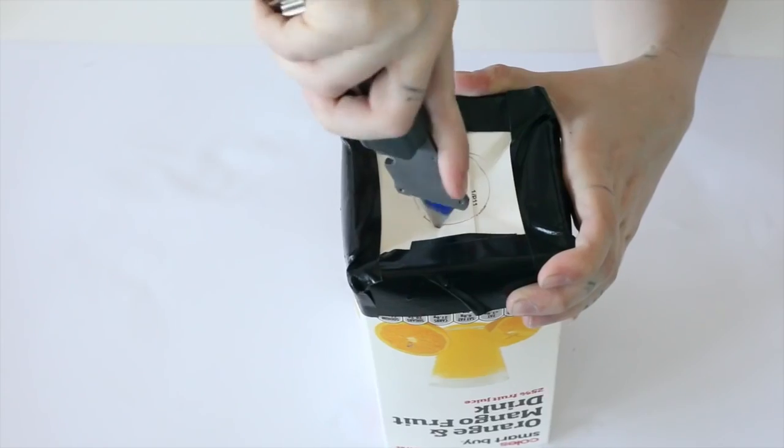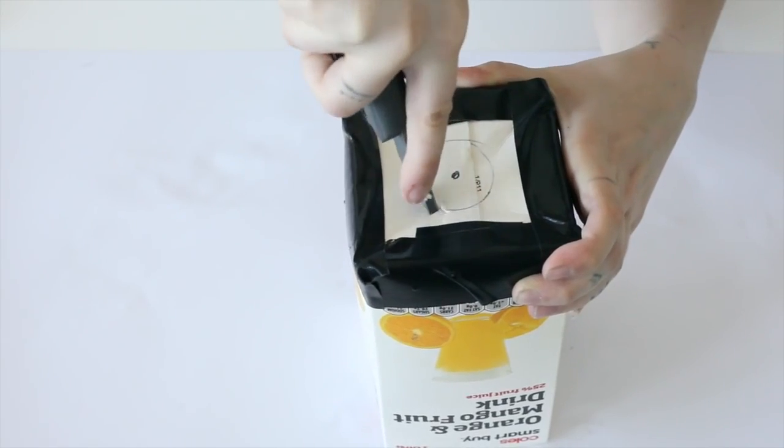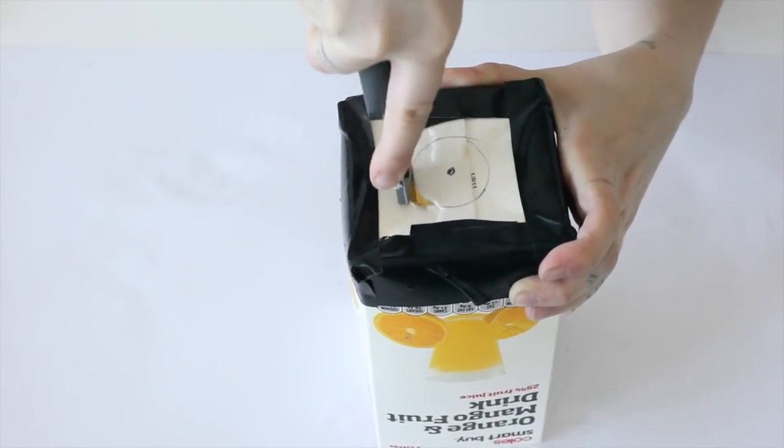As soon as the bottom is all sealed up, you're going to use your scalpel and cut out where you have traced the opening of the smaller bottle, because we're going to thread the smaller bottle through.